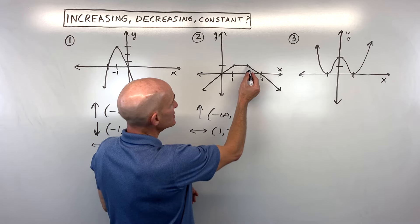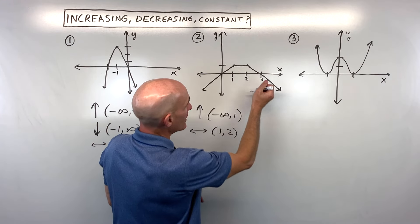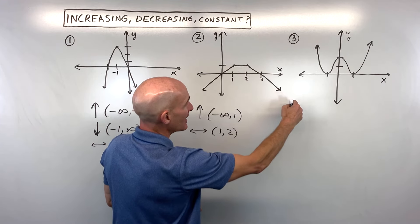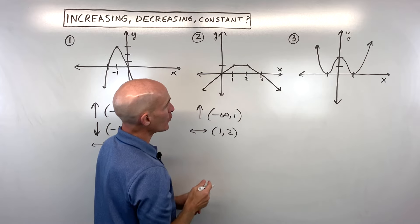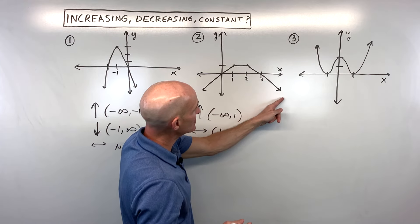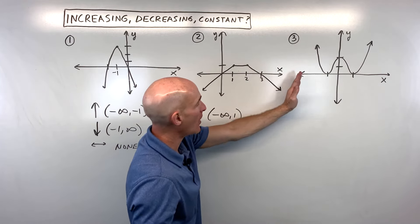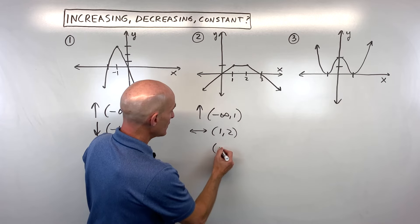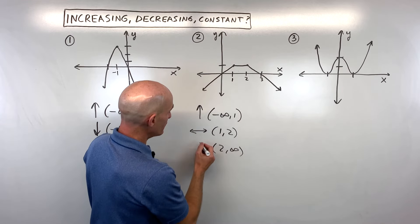And then once you get to two, the graph is going down to the right — that's like a negative slope, it's decreasing. So for what x values are the y values decreasing? That's from two onward, or we could say two to infinity.